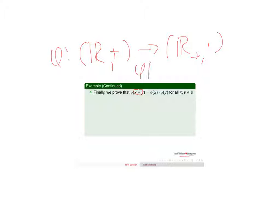Now, is the operation preserved? So again, the inputs are going to be under plus because this is mapping the reals under addition to the positive reals, not including 0, under multiplication. And our map is phi of x equals 2 to the x. So the inputs are going to be added because that's the operation there. The outputs are going to be multiplied because that's the operation there.